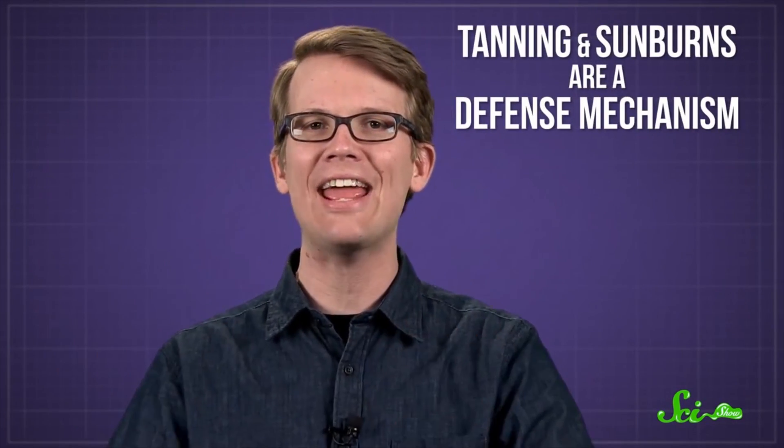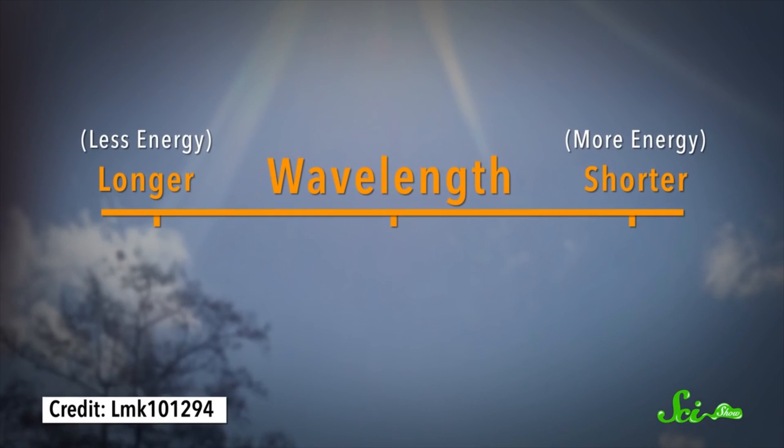But if you do get tanned or sunburned, we will assume by accident, there's a lot going on inside your skin. The sun is not actually tanning or burning you. The whole process is actually a defense mechanism, and you are tanning and burning yourself. The trouble with sunlight is that it contains lots of radiation in the ultraviolet part of the spectrum, and some of that has enough energy to damage the cells in your skin, especially their DNA.